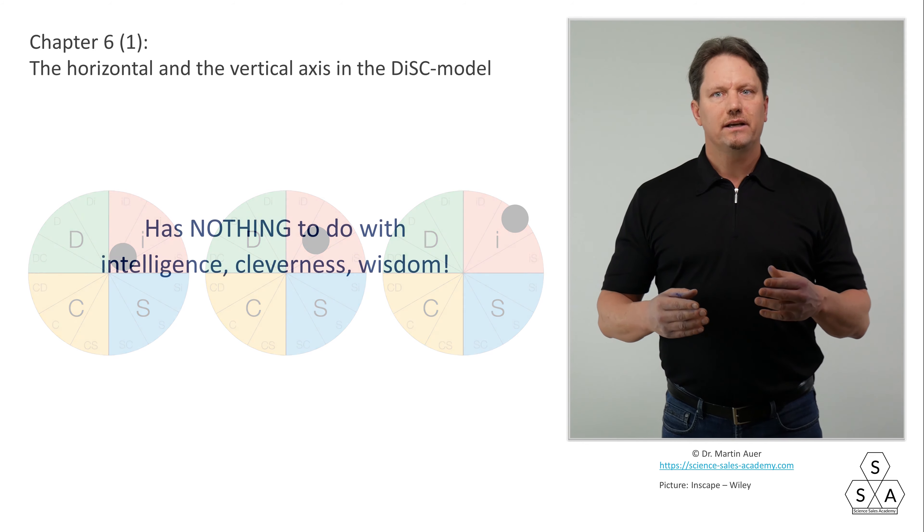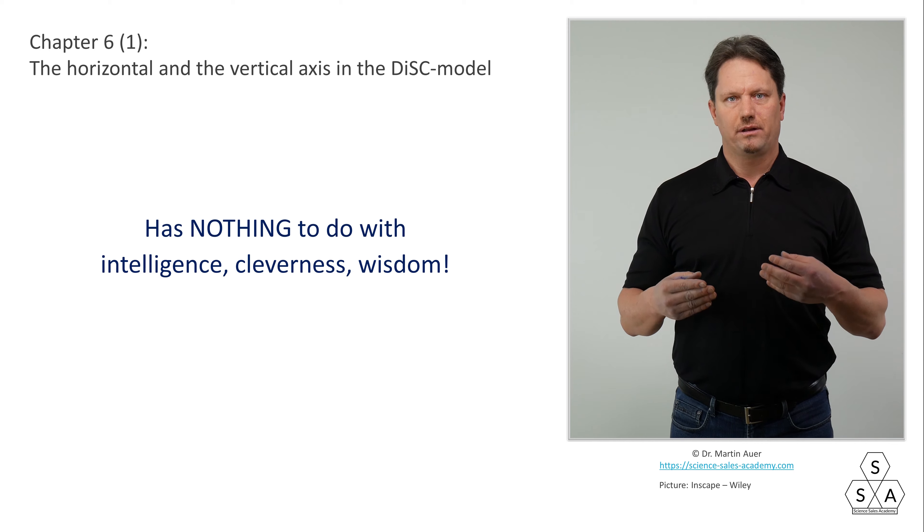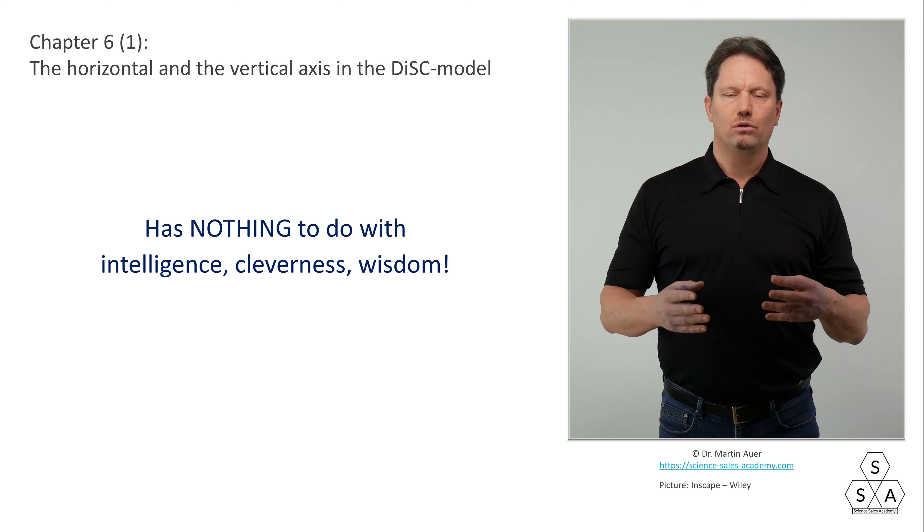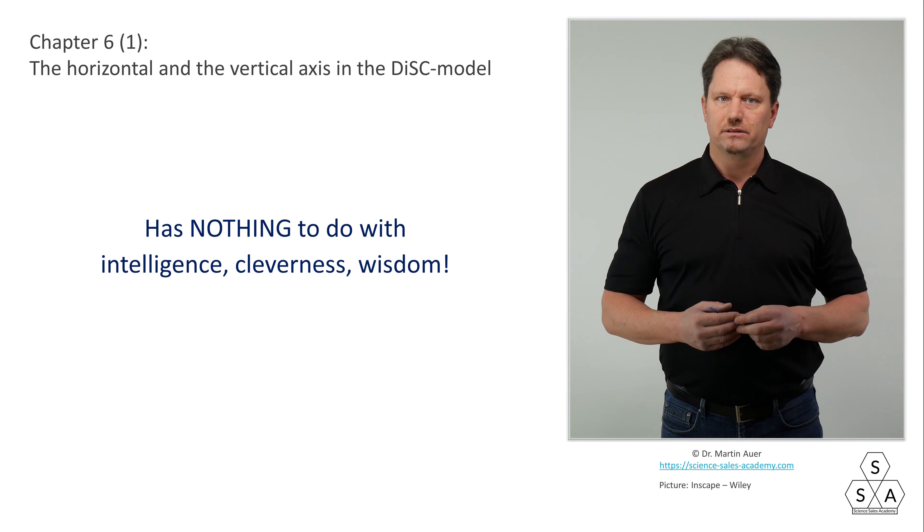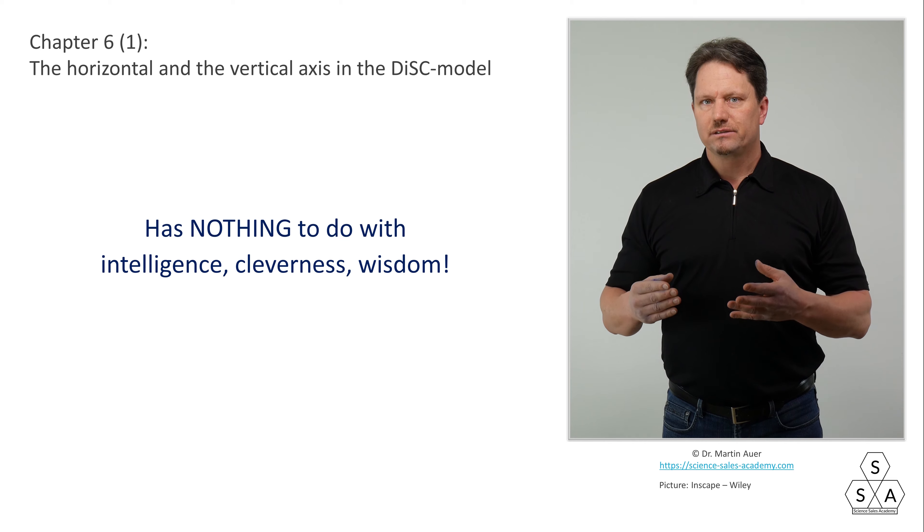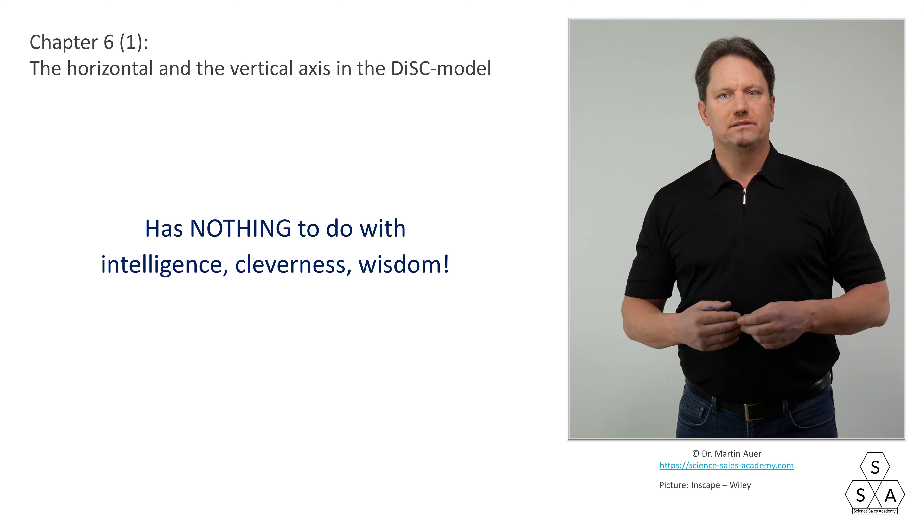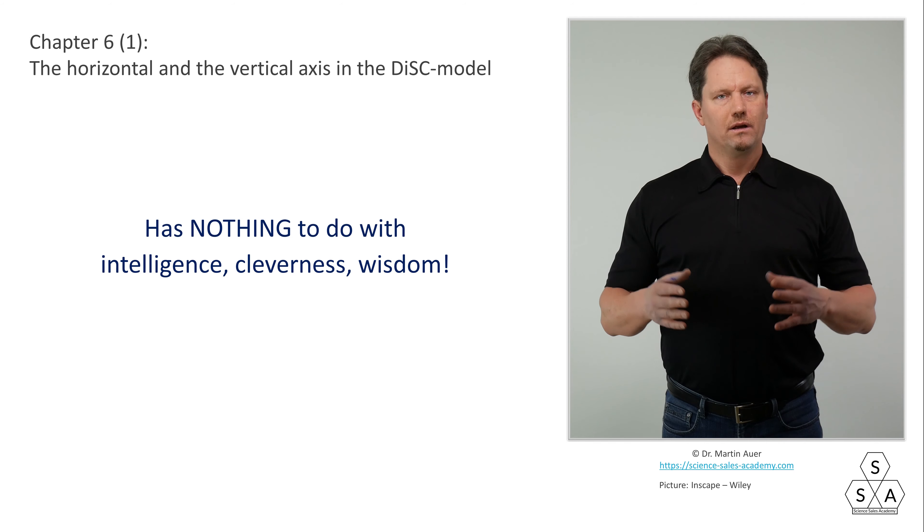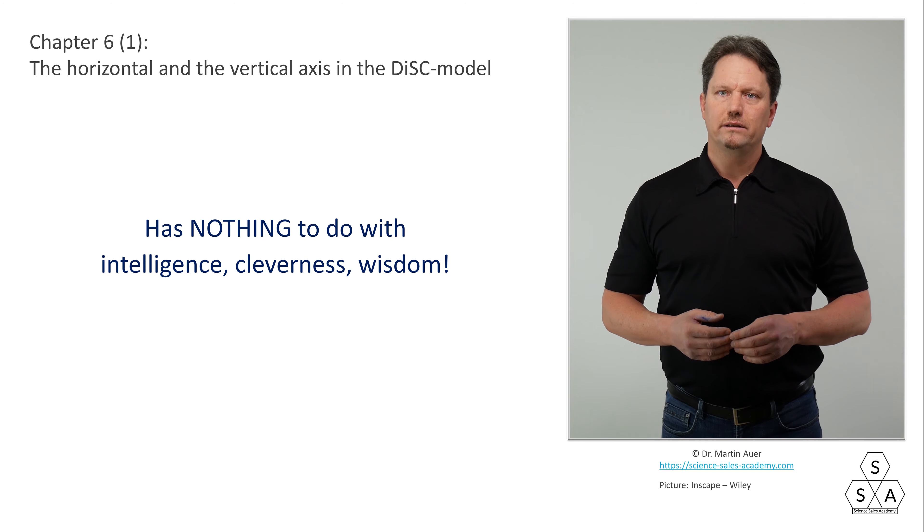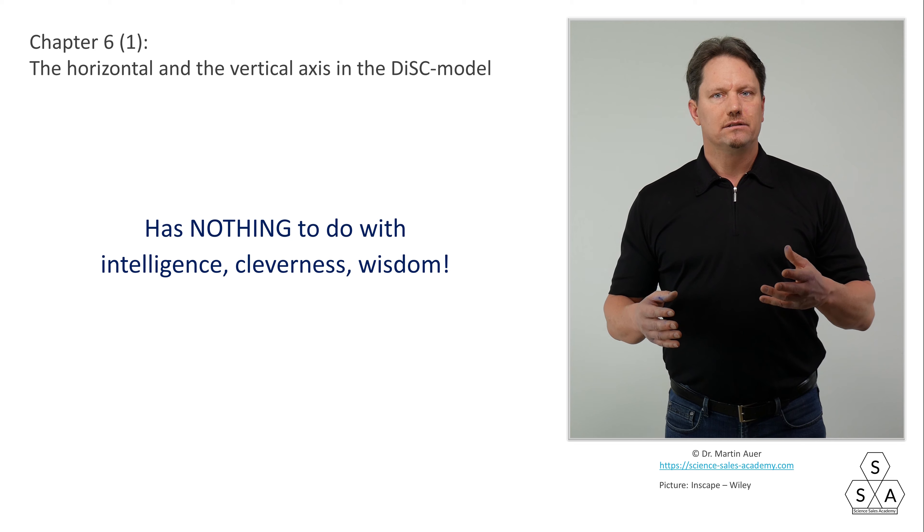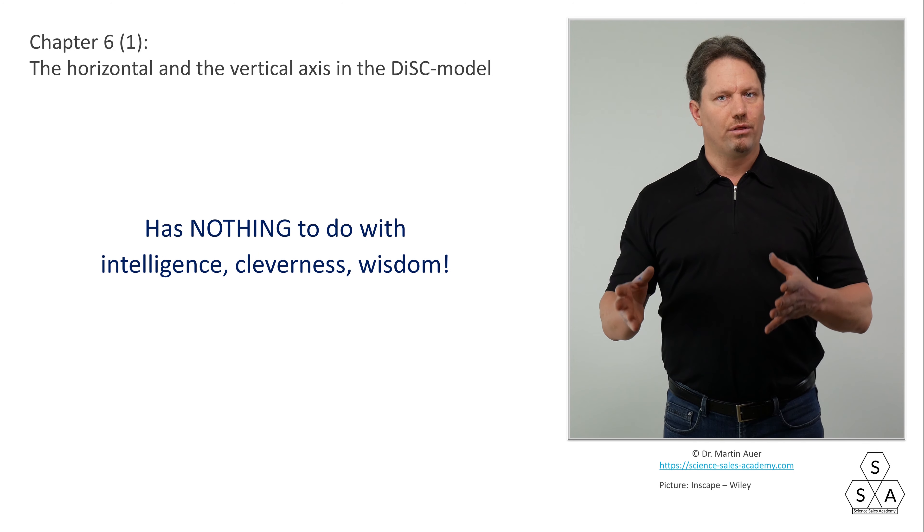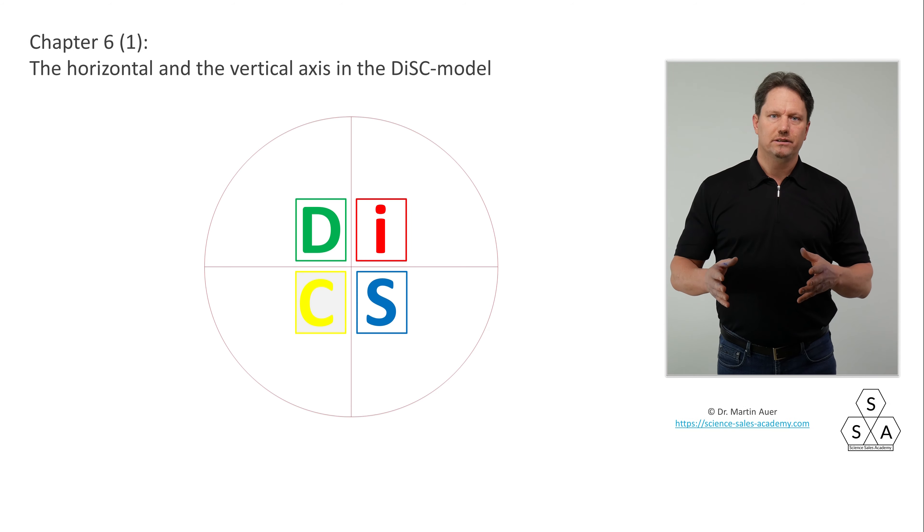Depending on this, one would make the point, the dot of primary preference, either closer to the center or closer to the outer edge of the circle. Here I would also like to say that it has nothing to do with intelligence, cleverness or wisdom, whether we find ourselves more at the 12 o'clock position or at the 6 o'clock position. Intelligence is not depicted here in the DISC model. Preferences in behavior, on the other hand, is depicted. And this goes back to our emotional and psychic needs. In the next step, let's delve deeper into the subject and have a closer look at the four Wiley DISC basic types and the two axes from a slightly different perspective.